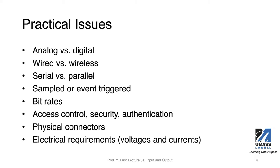For events, we need to determine whether we want sampling or triggering. Sampling is for cases where signal changes are always important to know, whereas events are rare, so you don't want to spend resources entertaining them all the time. For data transfer, we also need to consider the speed, often described in bit rates. There are additional considerations in terms of security, authentication, and access control.